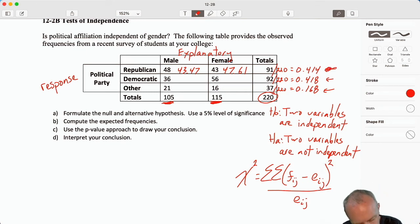Now I'm done with the Republican. Now we take the Democratic. If the variables are independent, we would expect the same proportion of men to support the Democratic Party as women. So I take that common proportion 0.418, and now I'm multiplying these totals, 105, giving me 43.89. And 0.418 times 115, 48.07. Now I'm on to the Other. So I take 0.168 times 105, that expected value would be 17.64. And for the females, 0.168 times 115, that expected value 19.32.